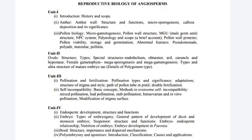Next: pollen viability. Next: what are pseudomonads. Next: characteristic feature of pollinia. Next: what are ovules — characteristics of ovule. Next: what is orthotropous ovule and anatropous ovule. Next: what is endothecium.